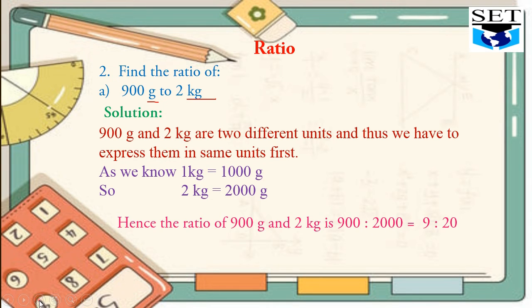What we will do is simplify it. We will cut two zeros of 2000 with two zeros of 900. So what is left? 9 to 20. Can we reduce it further? No. So this is our answer.